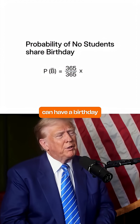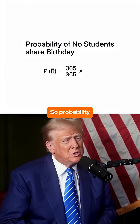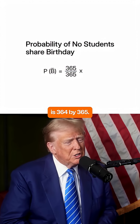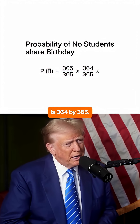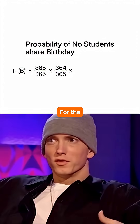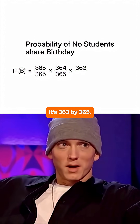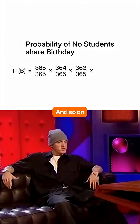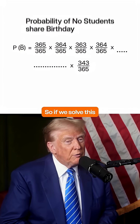The second student can have a birthday on any day except that one day, so the probability is 364 by 365. For the third student, it's 363 by 365, and so on until the 23rd student.